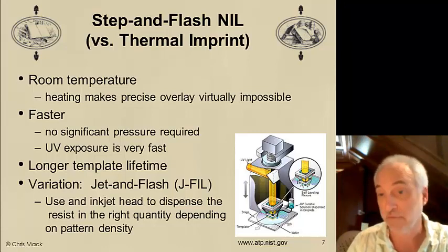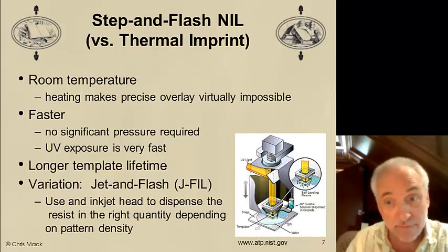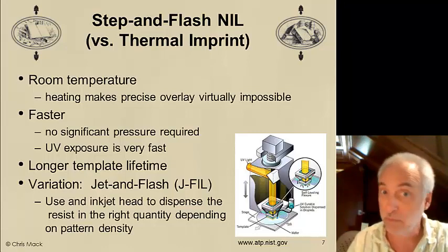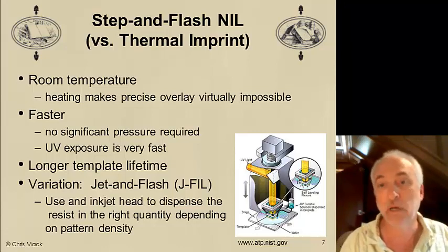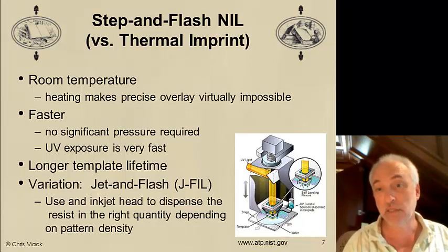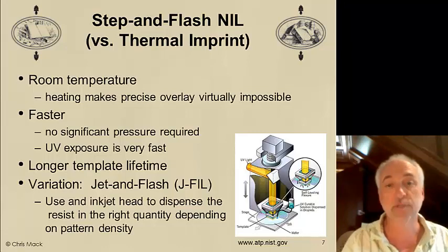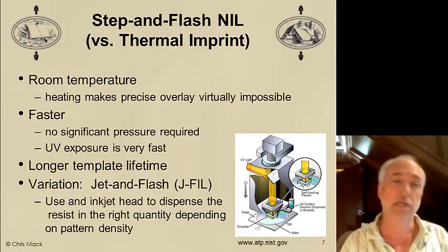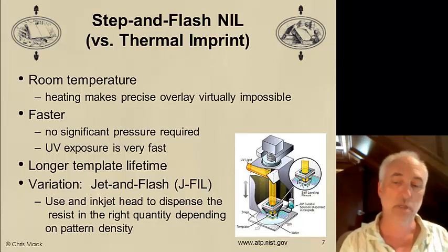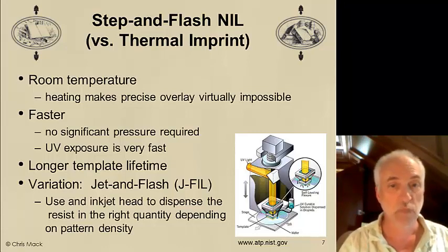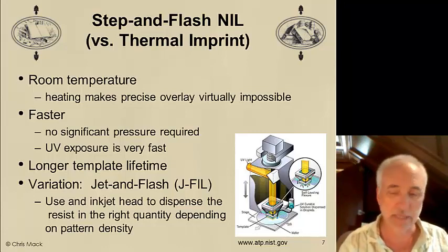One variation of this jet-and-flash approach is to use an inkjet head to dispense the liquid. The idea is you want to have just the right amount of liquid to fill the holes and not too much — otherwise it takes too long for that excess liquid to squeeze out the ends of your template. Since the pattern density can vary across the template, by using an inkjet printer to put drops of liquid just where you need it, you get the right amount of liquid in the right place and it speeds up how quickly you can push down and fill up the template. This is the approach that people are considering for semiconductor manufacturing.